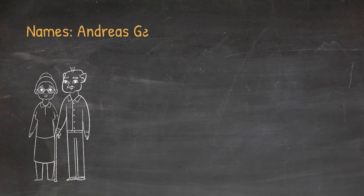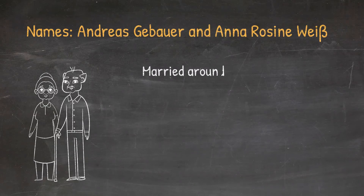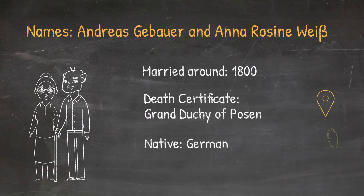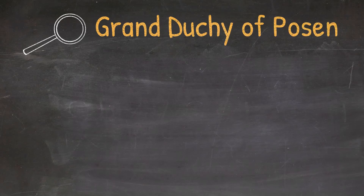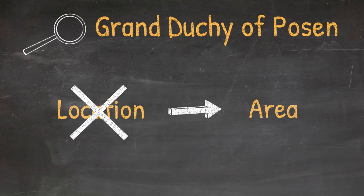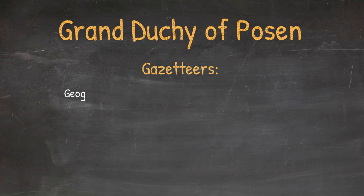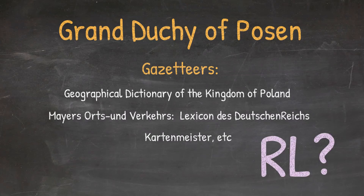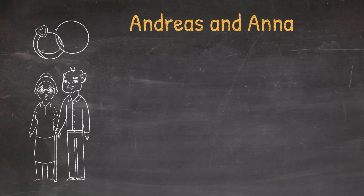Let me give you another example. This time we're looking for the marriage record of Andreas and Anna. We know they married around 1800, based on calculation from their last known child. We only know from their death certificate that they were born and most likely married in the Grand Duchy of Posen. We also know they spoke German and were Protestants. The first thing we should do is Google 'Grand Duchy of Posen' to understand that this is the name of an area. Since this is a reference to an area rather than a specific location, the use of gazetteers may not be that helpful here in locating a possible RL.